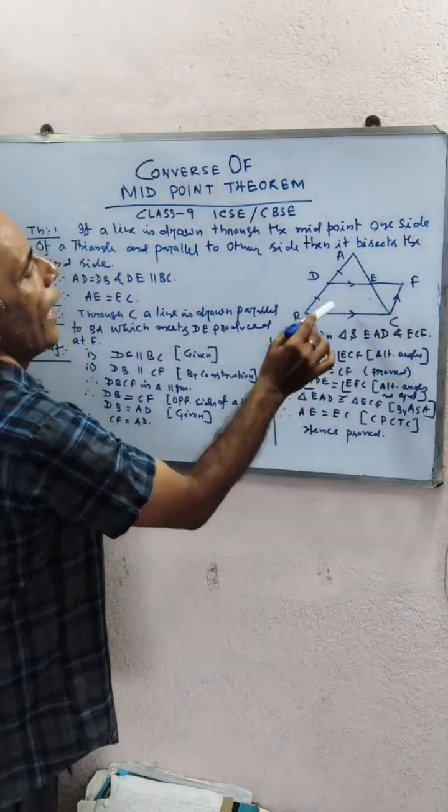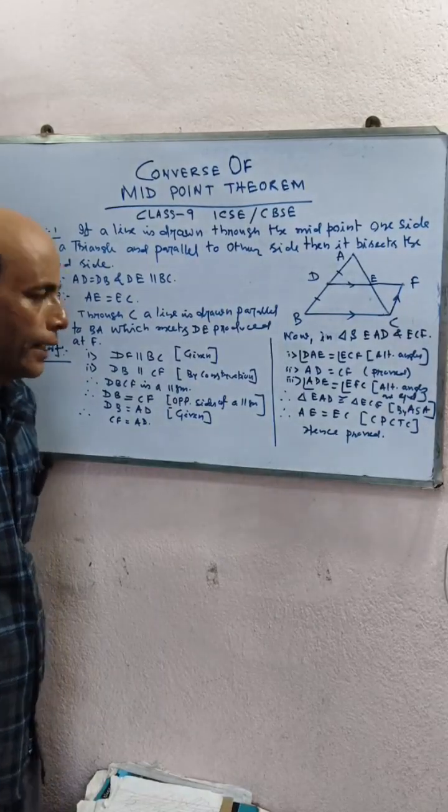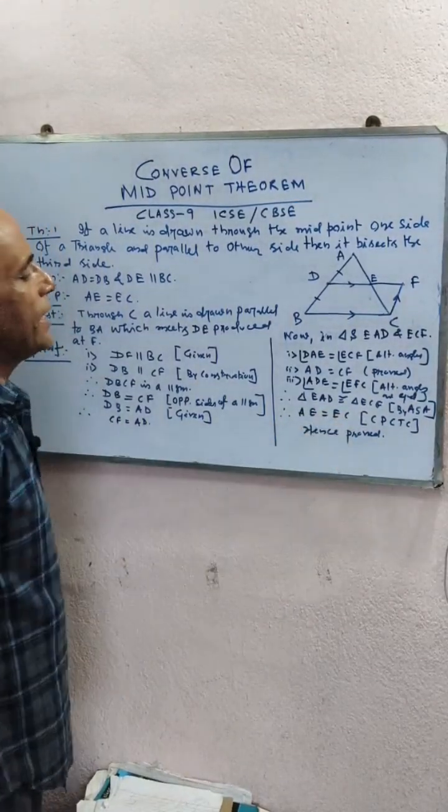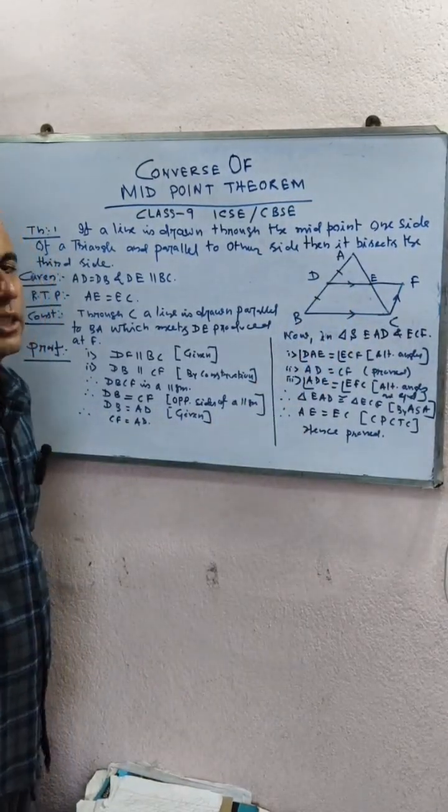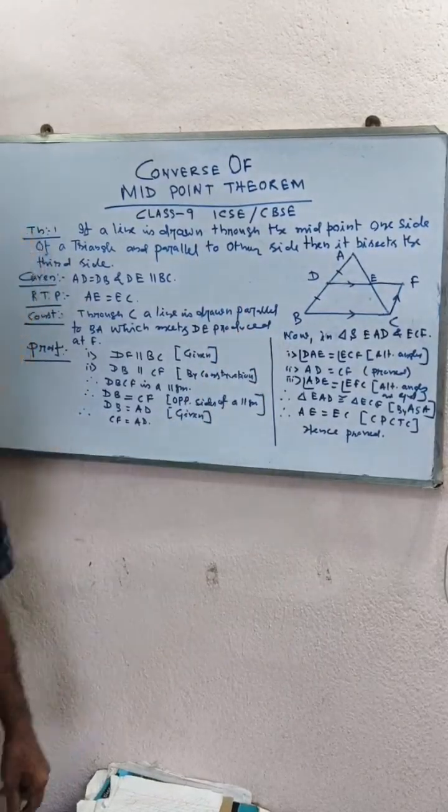Therefore by ASA congruency, triangle EAD is congruent to triangle ECF. Therefore AE equal to EC, corresponding parts of congruent triangles. Hence proved. Subscribe the channel to get this kind of information.